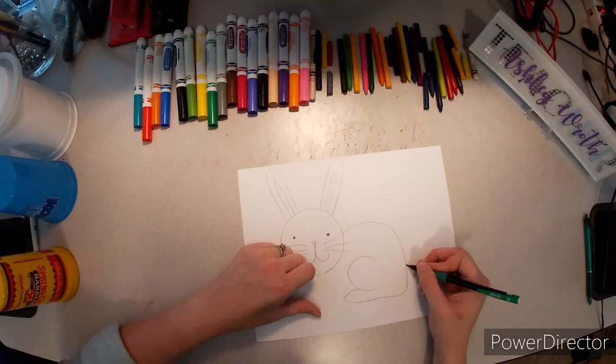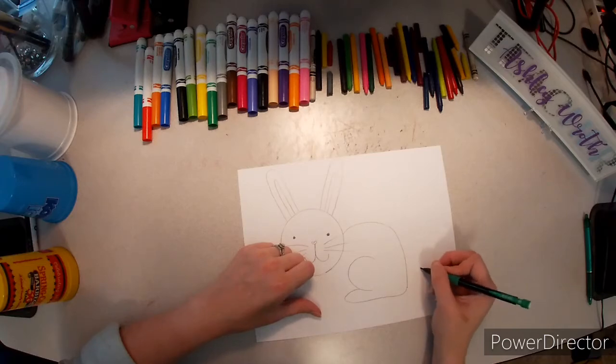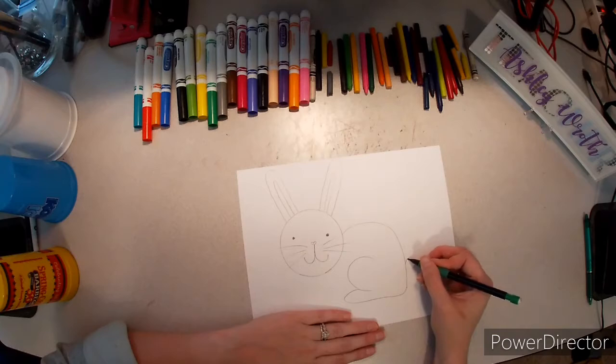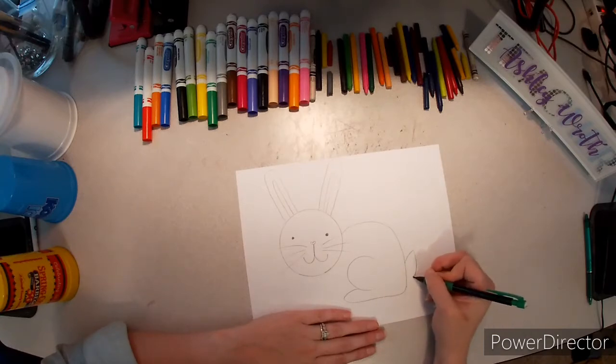We are going to do a fluffy tail. You can either do a big circle for the tail, but I like to do more of a Bugs Bunny tail. So it is pointy and then curved at the bottom.